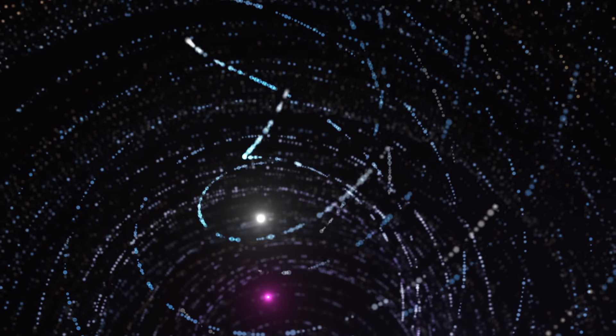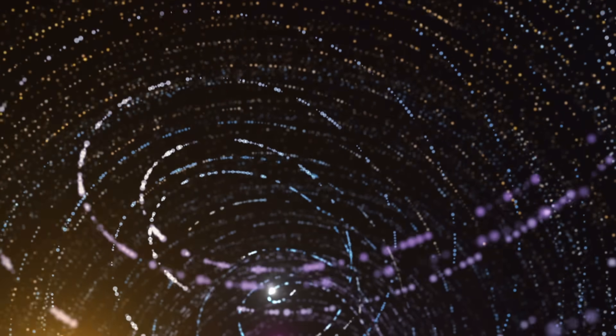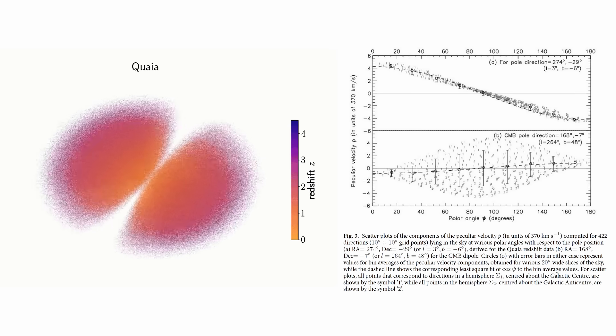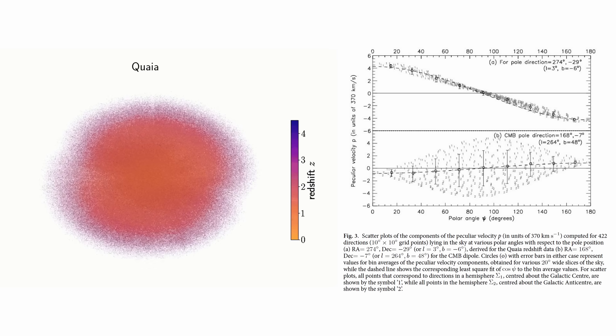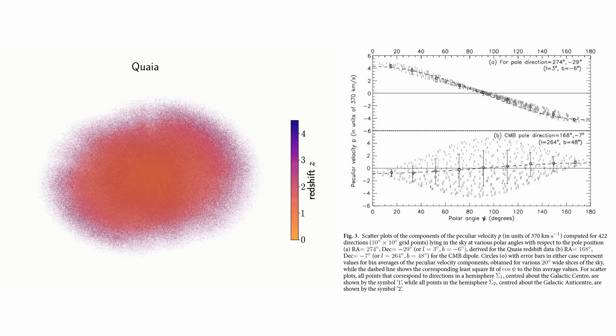Outside the standard model there are other ways to interpret what we see. Each comes from a different cosmology with its own explanation for redshift and the CMB. None of them are simple and each has problems of its own. However, they all share one point in common. They treat the quasar dipole as a real signal that needs to be explained, not dismissed.